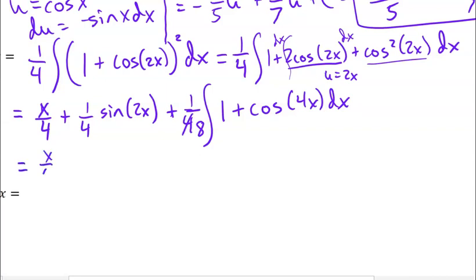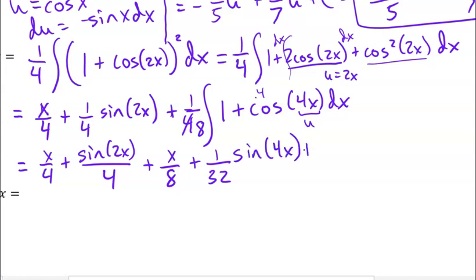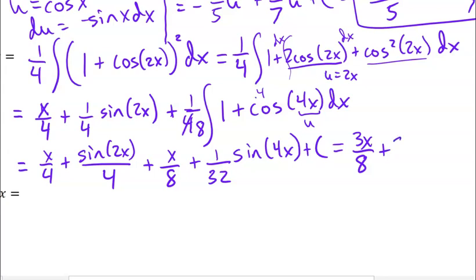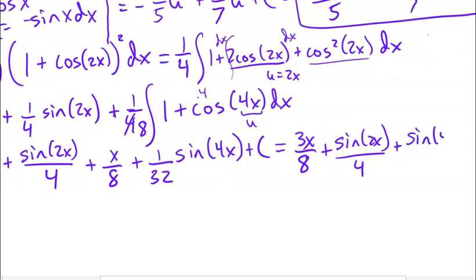That becomes x over 4 plus sine of 2x over 4. Plus — I've got a one-eighth — the integral of 1 dx is another x, so that's going to be x over 8. I can combine those in my last step. And then plus — again, I've got a composition, so u is 4x, du needs a 4, so I divide by 4 on the outside, making it 1 over 32 — and then the integral of cosine would be sine, so sine of 4x plus C. Condensing: x over 4 plus x over 8 gives 3x over 8, so I have 3x over 8 plus sine of 2x over 4 plus sine of 4x over 32 plus C.